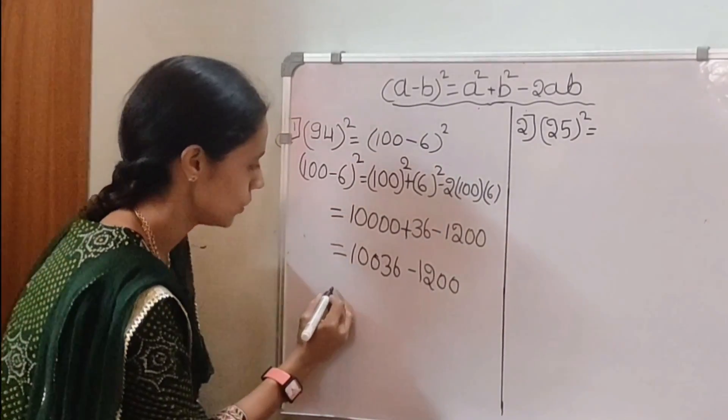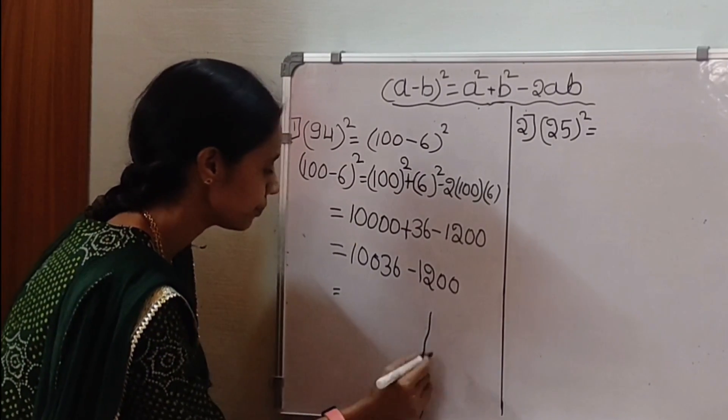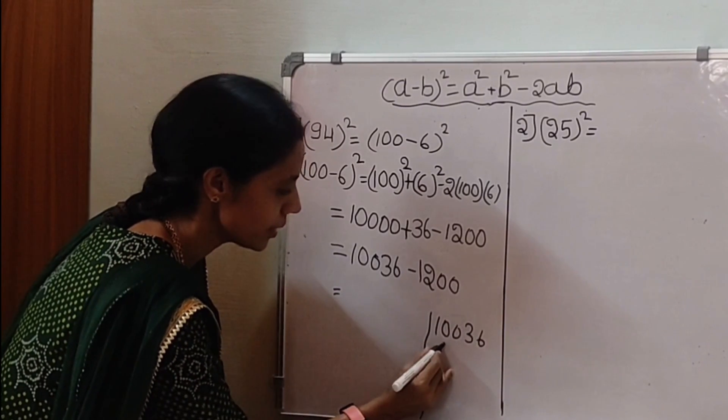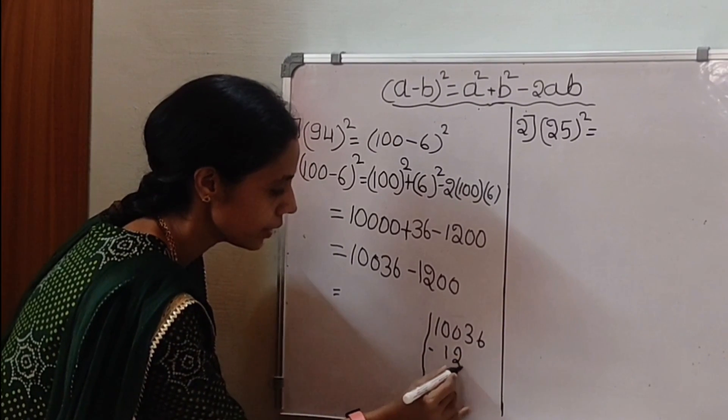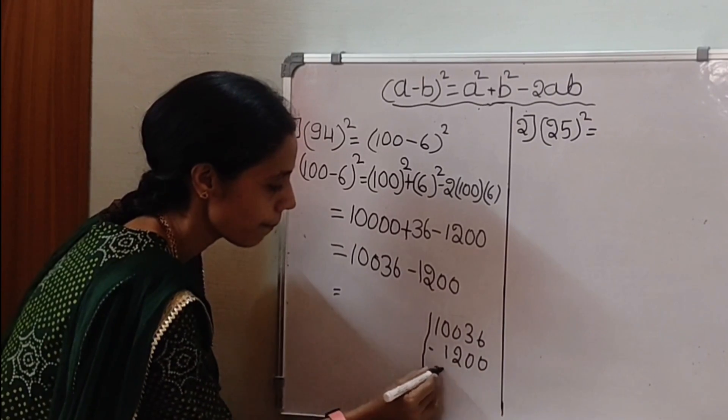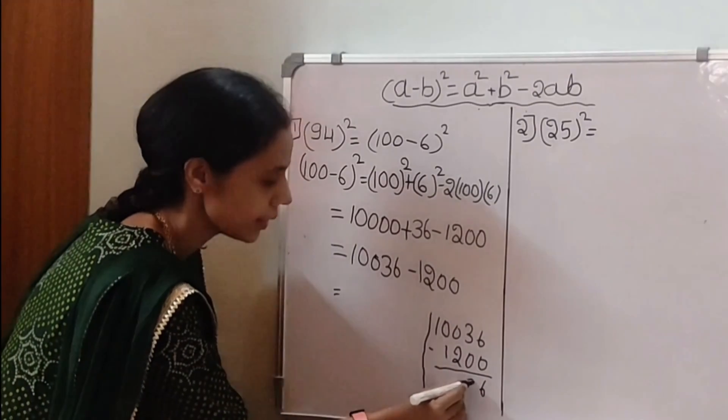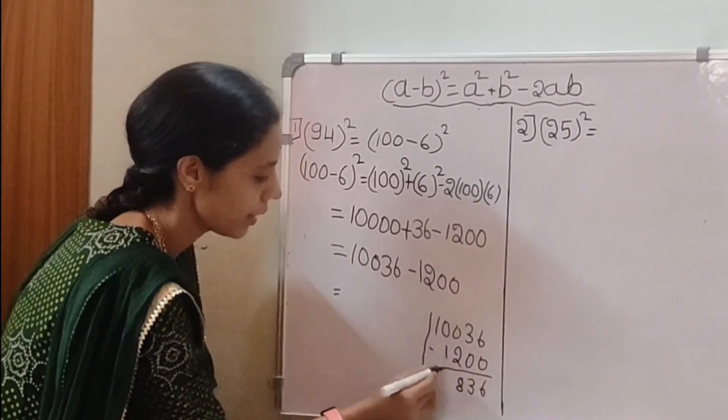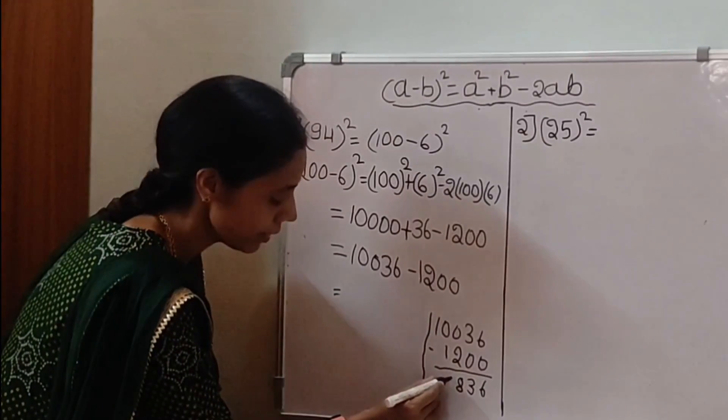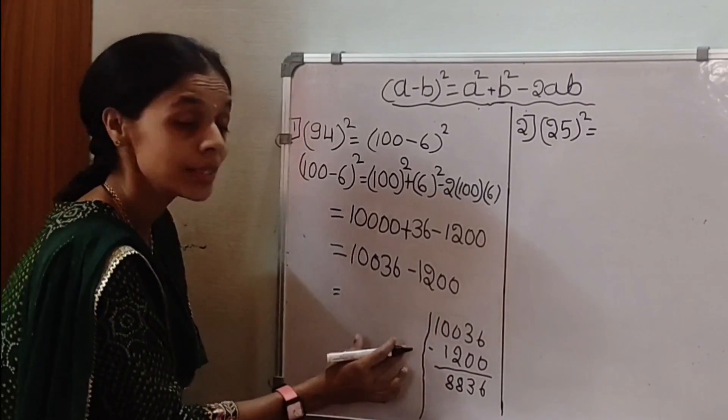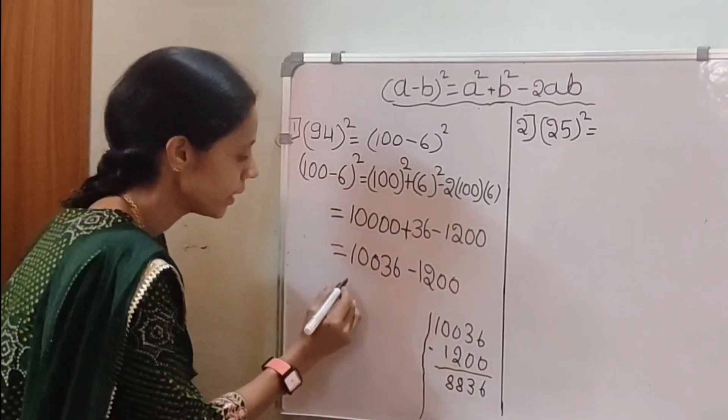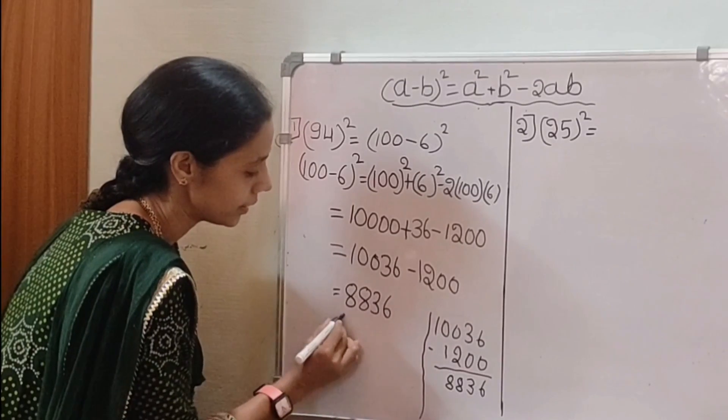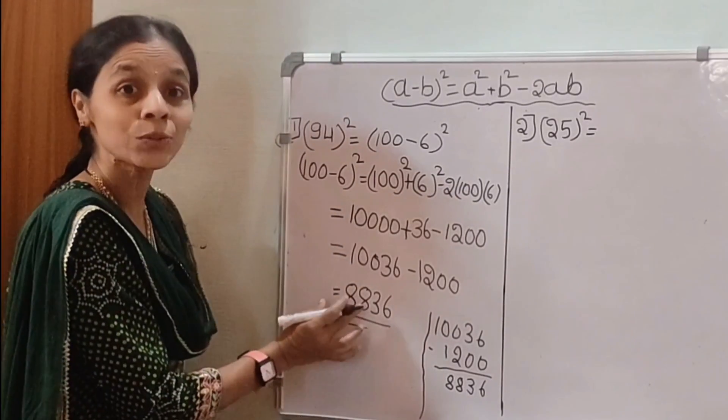Subtract these two. We get 10,036 - 1,200 equals 8,836. After 9 - 1 is 8. So, the square of 94 is 8,836. This is the square of 94.